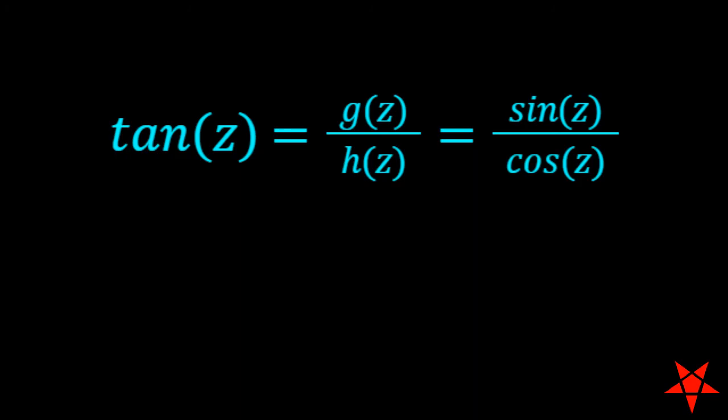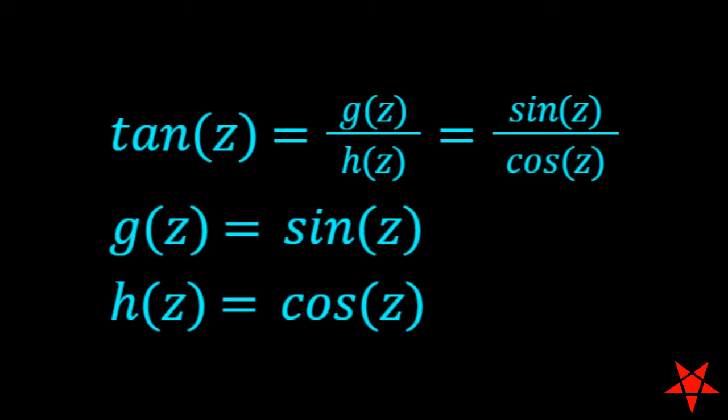If we let g(z) equal sine of z in the numerator and h(z) equal cosine of z in the denominator, then we can study the behavior of these functions at the aforementioned singular points.